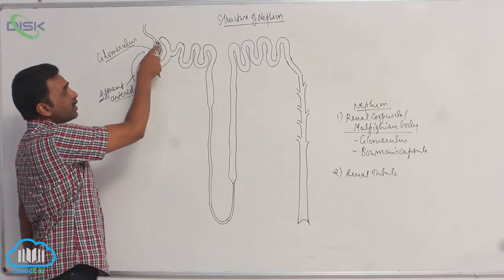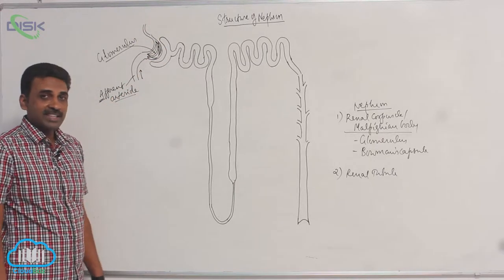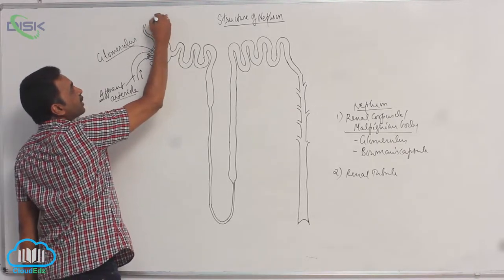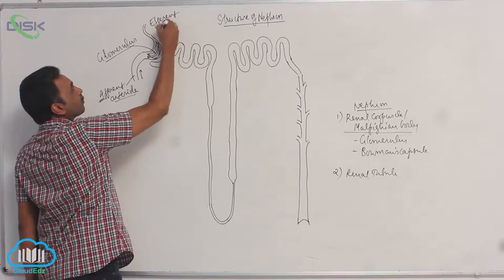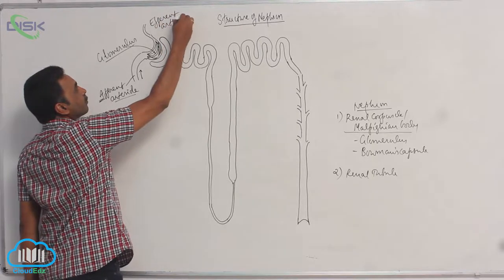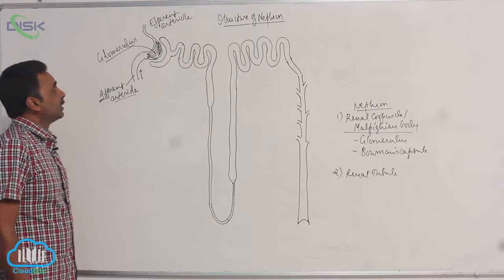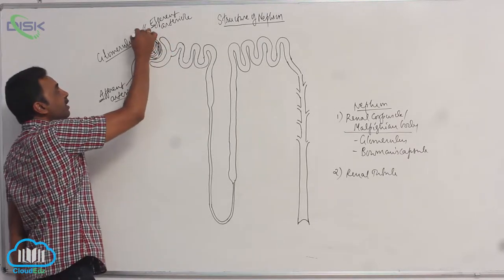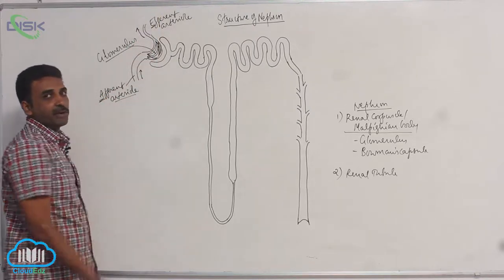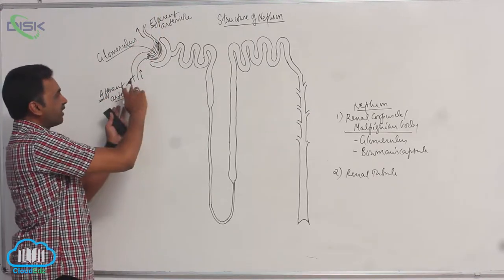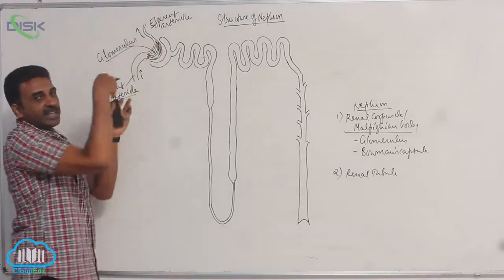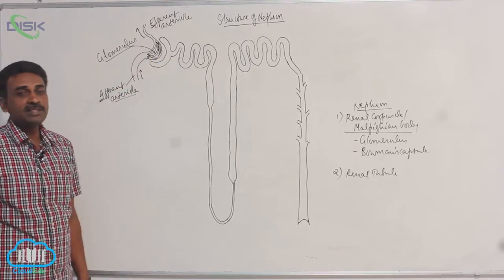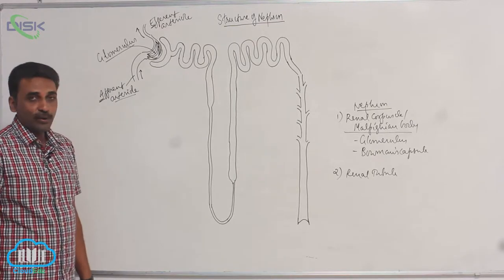The capillaries of the glomerulus then combine together and form a blood vessel called the efferent arteriole. So the afferent arteriole brings blood in, and the efferent arteriole takes blood out from the nephron. The bunch of capillaries in between is called the glomerulus.